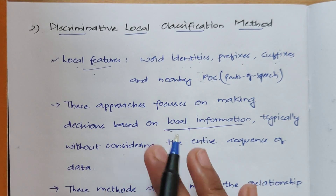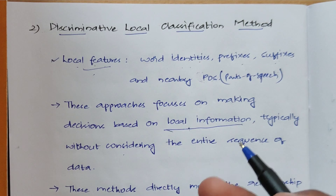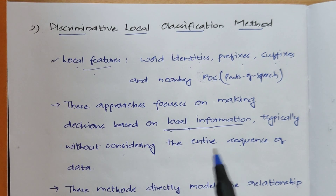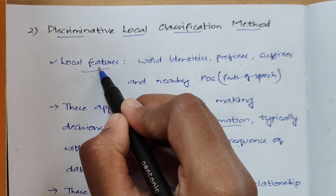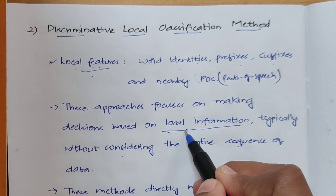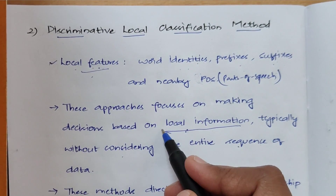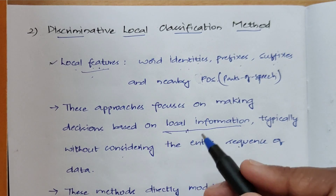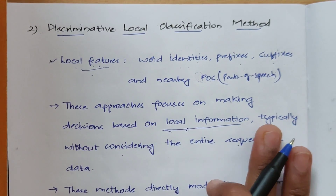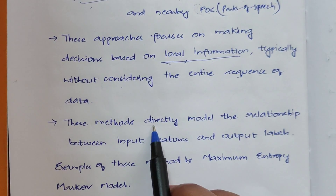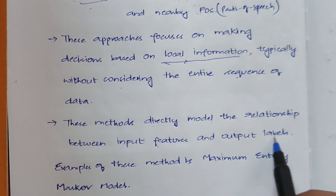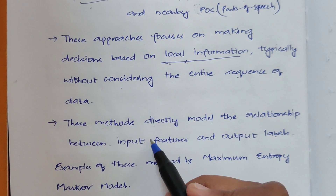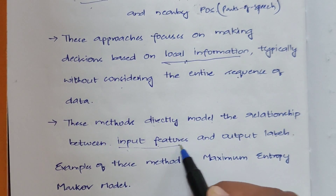In the previous method, it considers all the sequences and then predicts the label or generates a new sequence. But here, based on the local features only, it will be predicting the labels of a particular sequence — typically without considering the entire sequence. These methods directly model the relationship between input features and output labels.